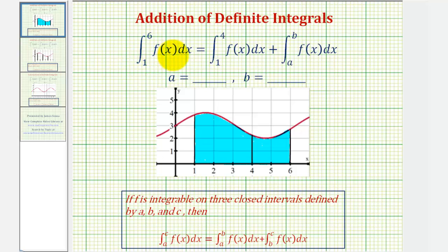We're given the definite integral of f of x from one to six equals the definite integral of f of x from one to four plus the definite integral of f of x from a to b, and we're asked to find a and b.